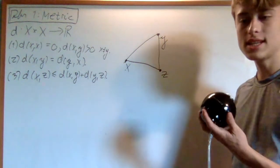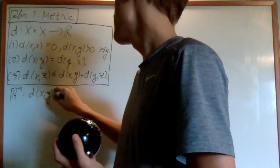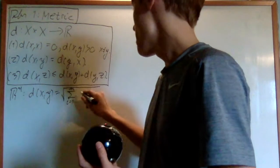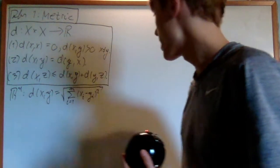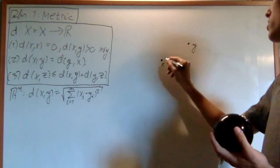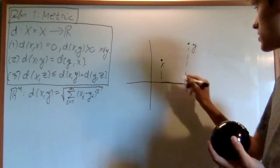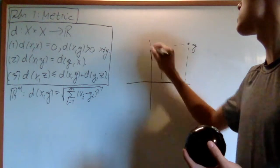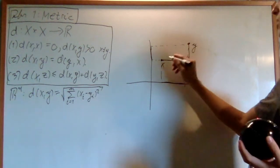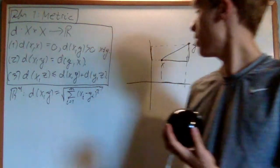So a metric is a generalized distance function. On ℝⁿ, we'll have the metric defined as the distance between x and y equal to the square root of the sum from i equals 1 to n of the squared differences between the components. This is just the Pythagorean theorem. I look at the difference between their x-positions and the difference between their second coordinates, creating a right triangle, so the distance is the square root of the sum of the squares of these distances — but in general dimensions.